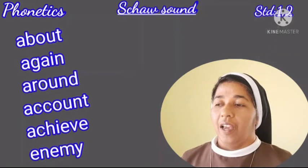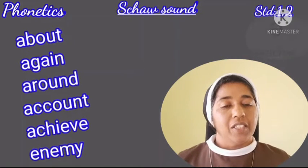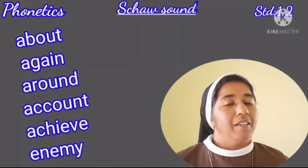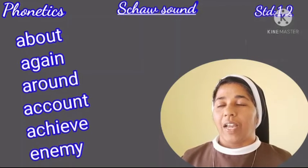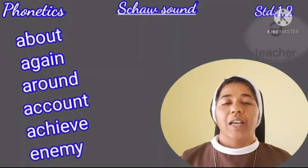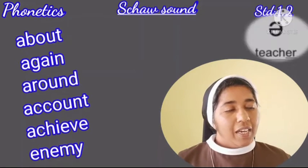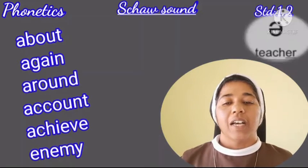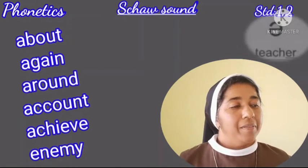More examples with the schwa at the beginning: 'achieve' — that A is a schwa sound. Also 'enemy.' So at the beginning we have: about, again, around, account, achieve, enemy. In the phonetic symbol for these words, you would see the upside-down E as the first symbol.